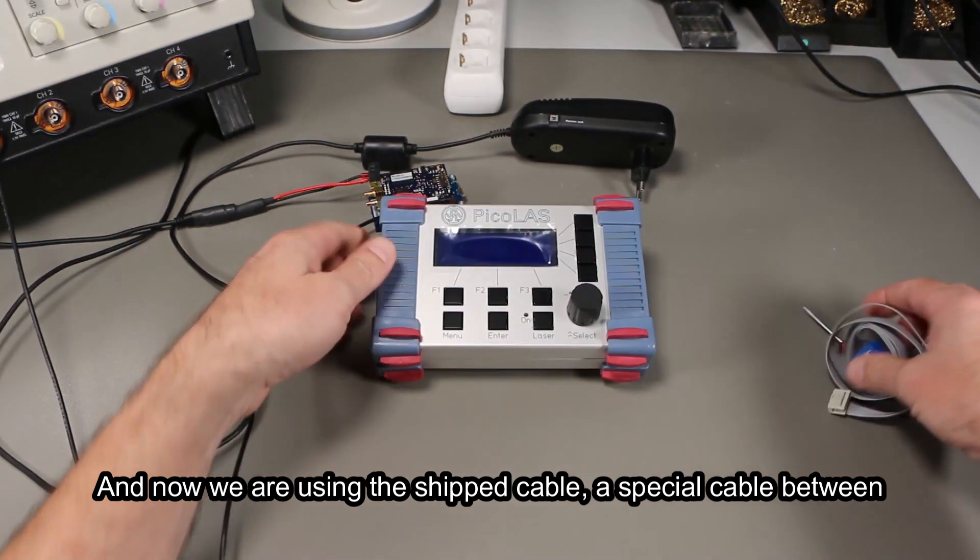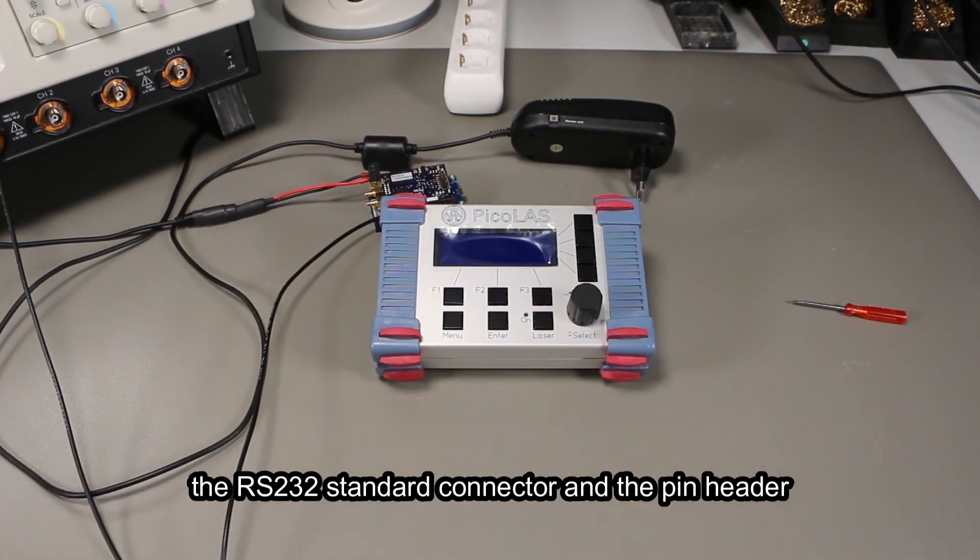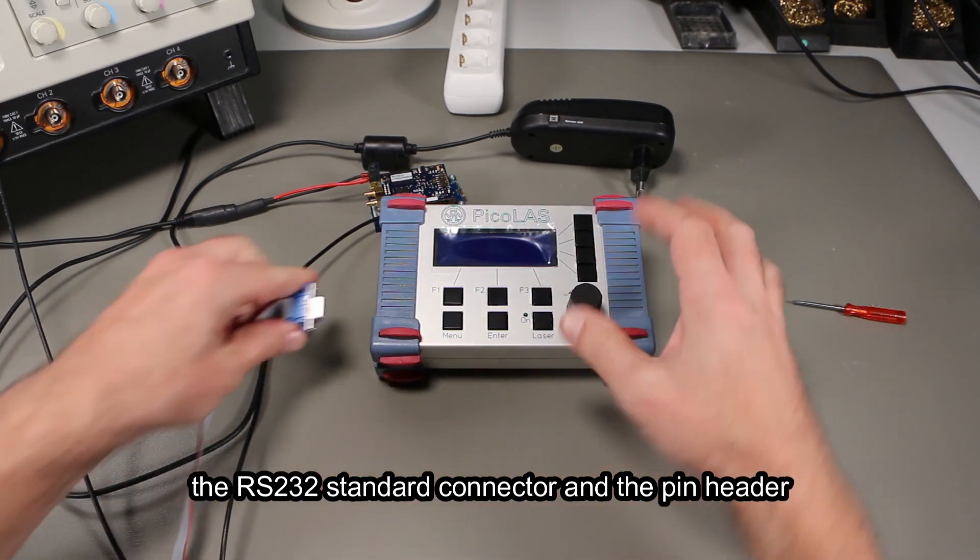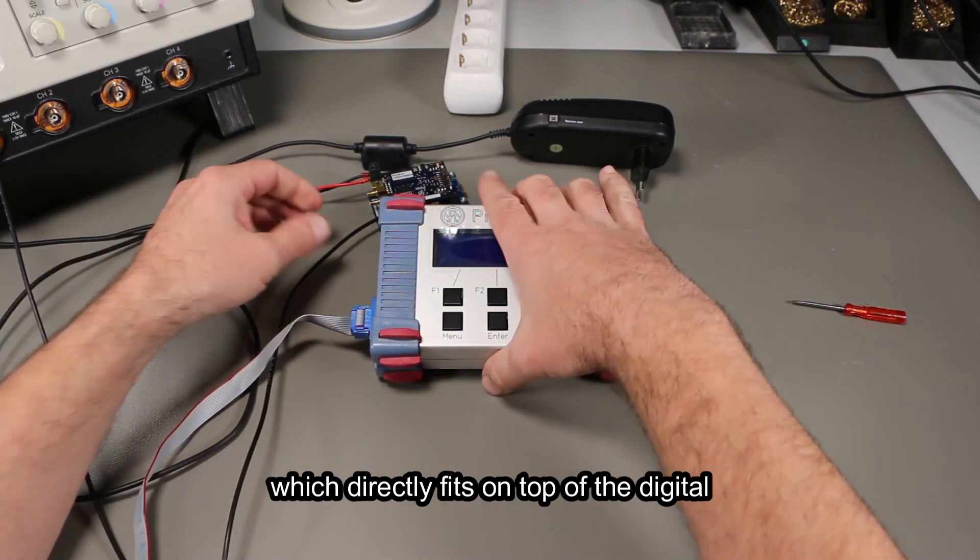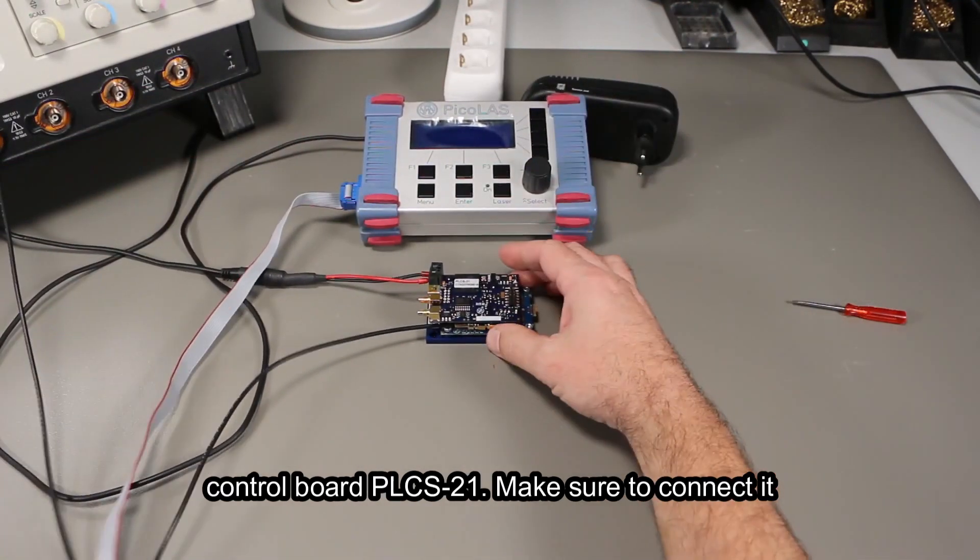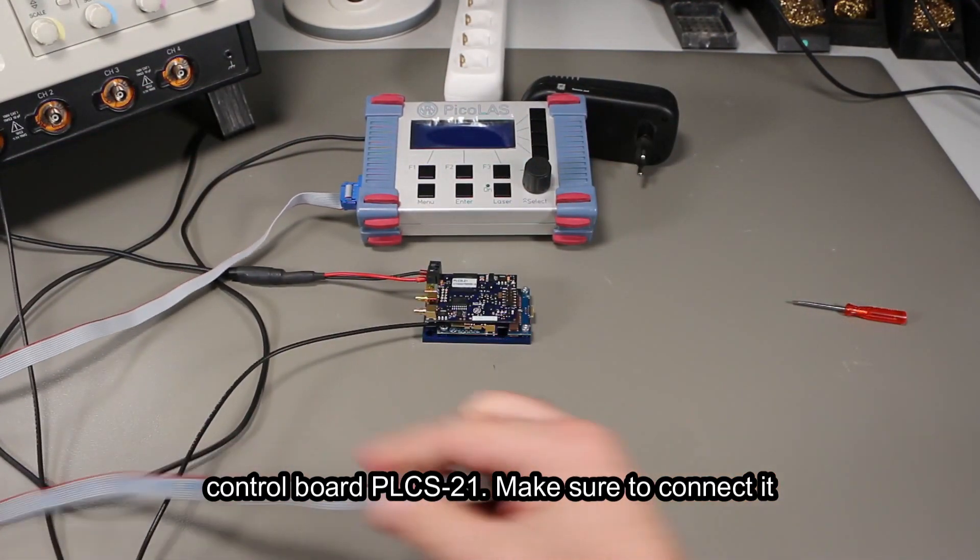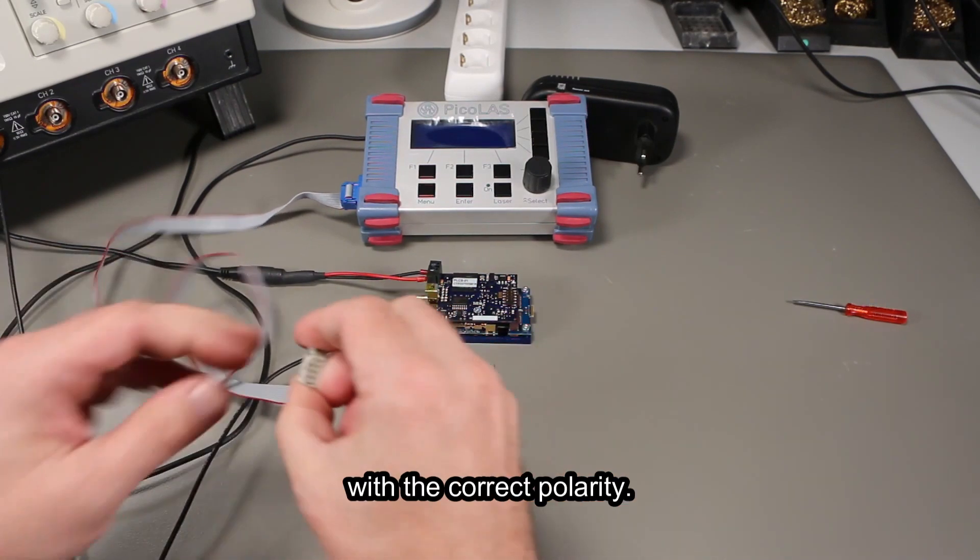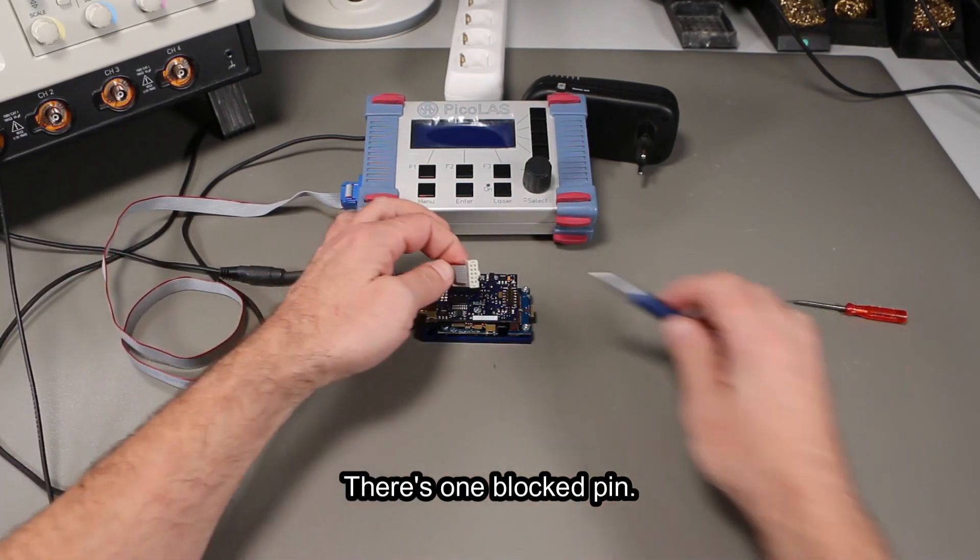Now we're using the shipped cable. It's a special cable between the RS-232 standard connector and the 10-pin header which directly fits on top of the digital control board PLCS21. Make sure to connect it with the correct polarity. There's one blocked pin.